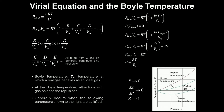Now, if you remember that the molar volume is simply the volume divided by the number of moles and you express it that way, that gets you right back to the most typical form of the ideal gas equation of state, which is that pressure equals nRT over V.